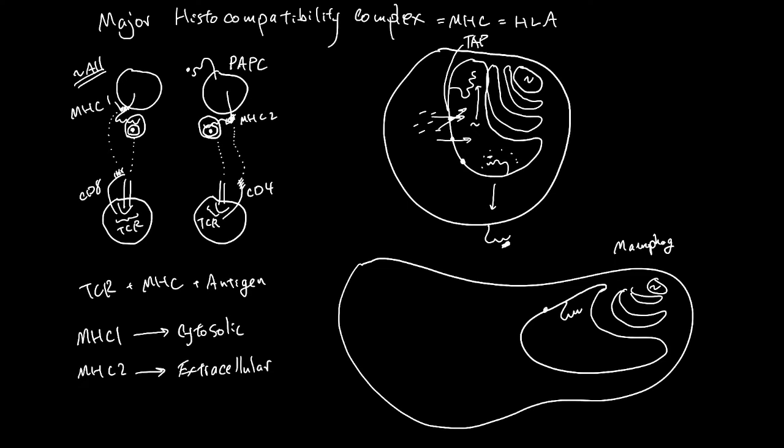It also has TAP, so cytosolic things are constantly moving into the ER, and MHC-1s are constantly moving to the cell membrane to display the cytosolic items.